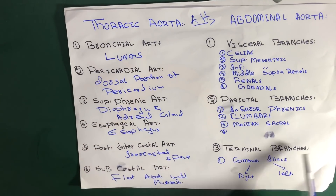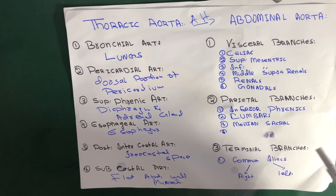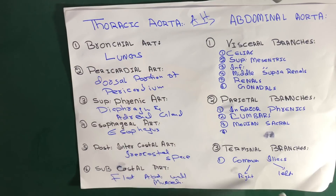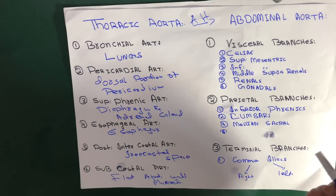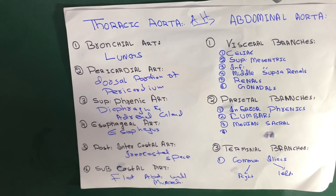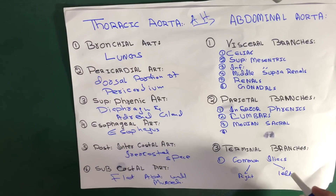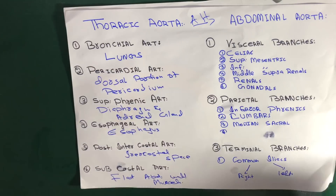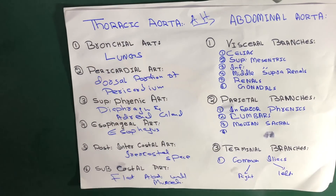The terminal branches: when the abdominal aorta reaches the navel point, it divides into the right and left common iliac arteries, which further supply the lower regions of the body. That's all about the branches of the aorta.